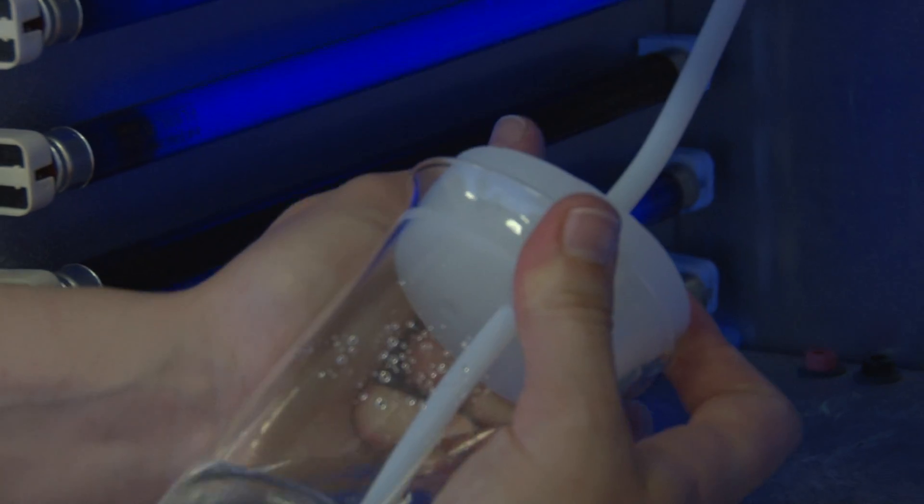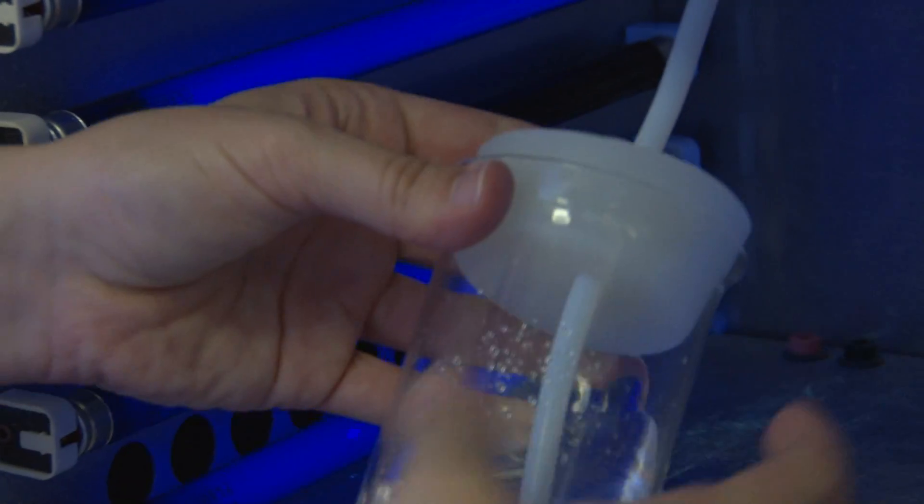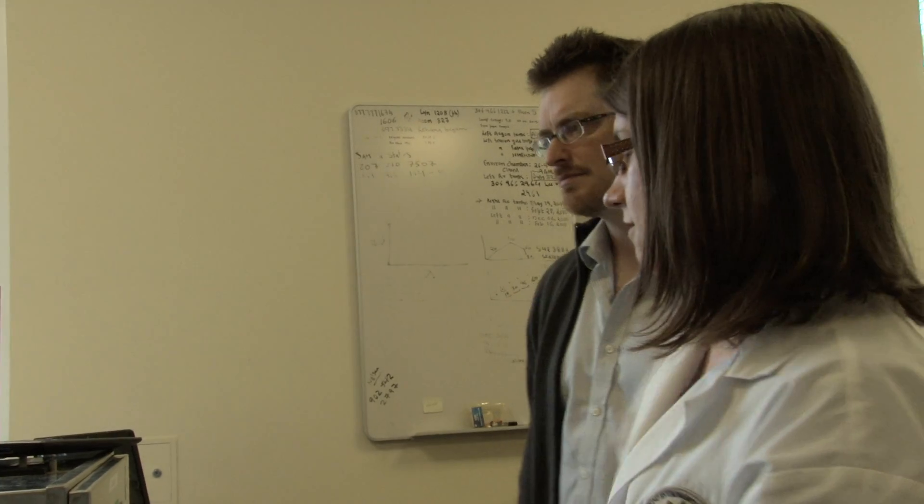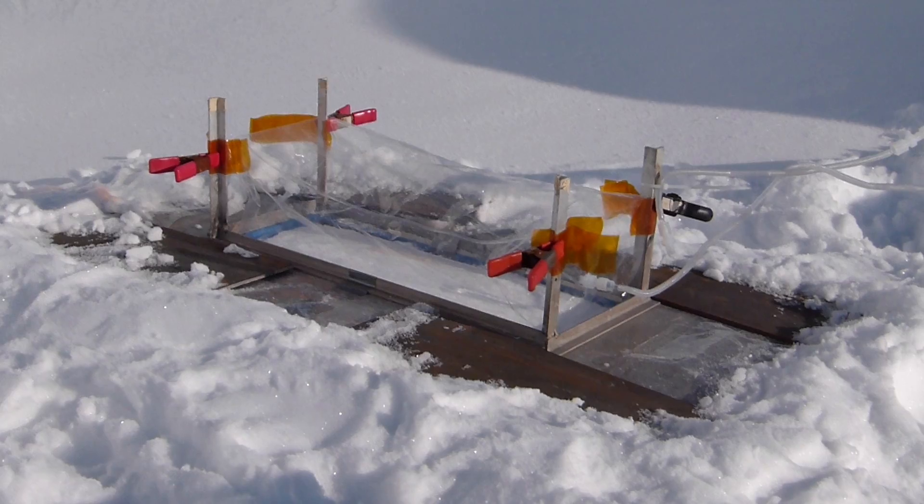We have what are called photoreactors, which we can use to simulate different wavelengths of solar radiation. We can keep our frozen snow samples inside that photoreactor frozen, and then we can measure how mercury changes form within that snow sample when we irradiate it.